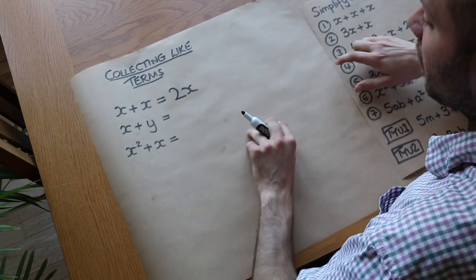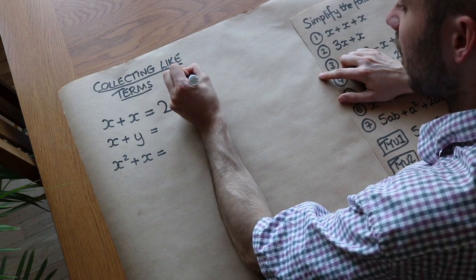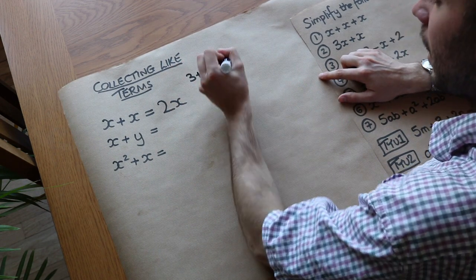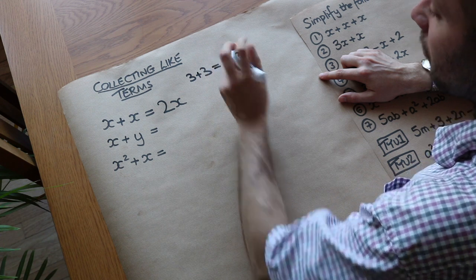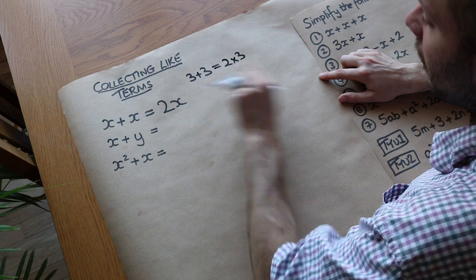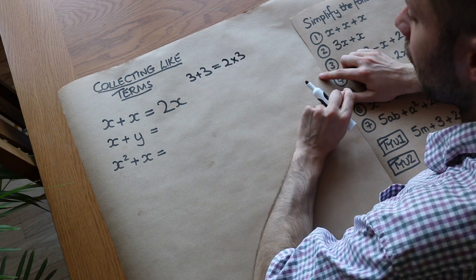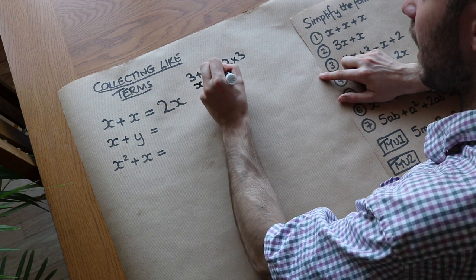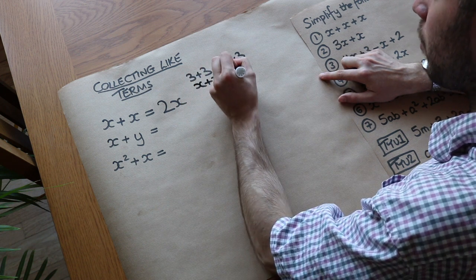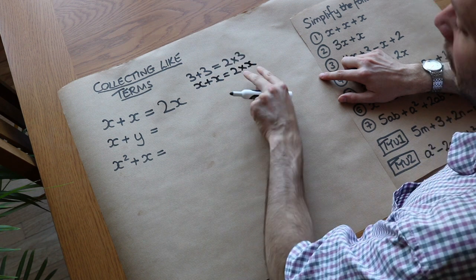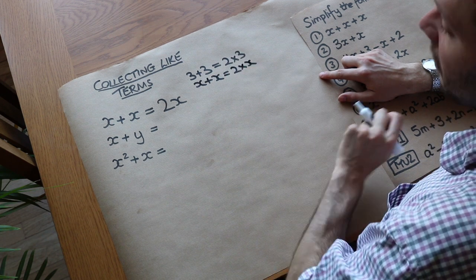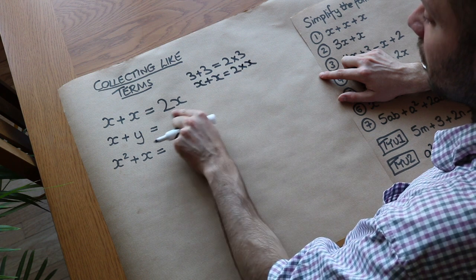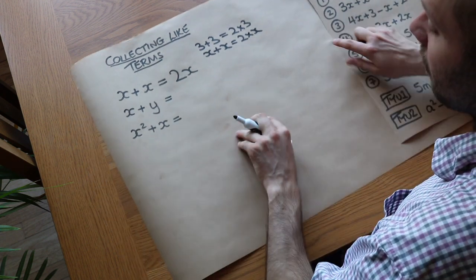The reason that works is if you look at numbers: if we had 3 plus 3, we could write that as 2 times 3, because 2 times 3 means 2 lots of 3 added together. In exactly the same way, if we had x plus x, that would be 2 lots of x, and 2 times x is just 2x, because if you write them next to each other it means you're multiplying them together.